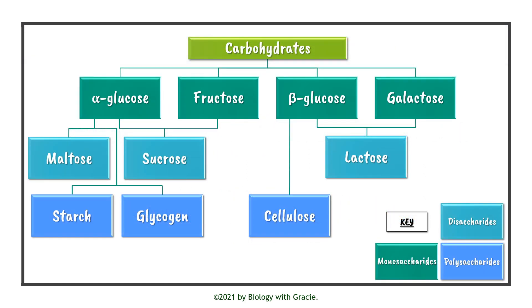Here's a chart summarising the monosaccharides, disaccharides and polysaccharides we've discussed. At the top we have carbohydrates, then our monosaccharides: alpha glucose, fructose, beta glucose and galactose. Alpha glucose links to the disaccharide maltose. Sucrose links to alpha glucose and fructose. Lactose links to beta glucose and galactose. For polysaccharides, starch and glycogen both link to alpha glucose, and cellulose links to beta glucose.